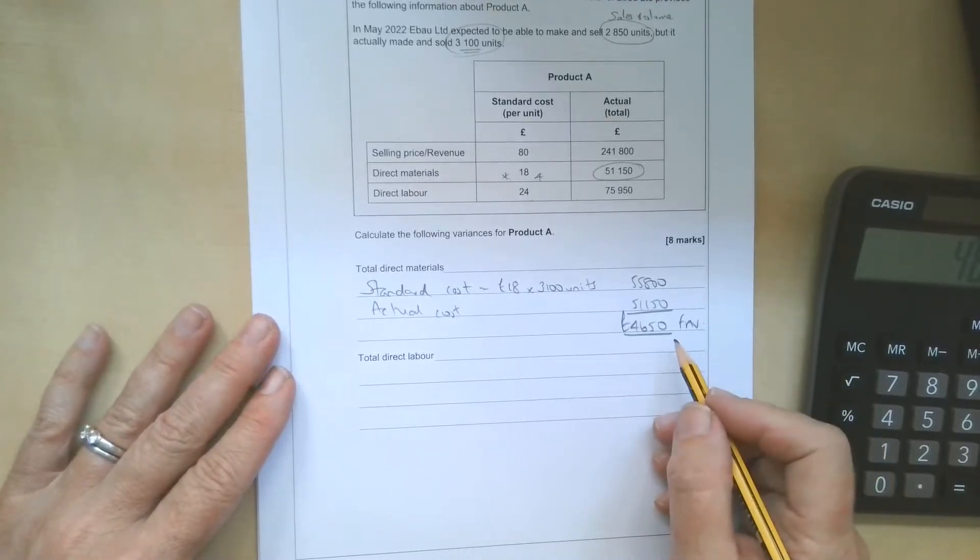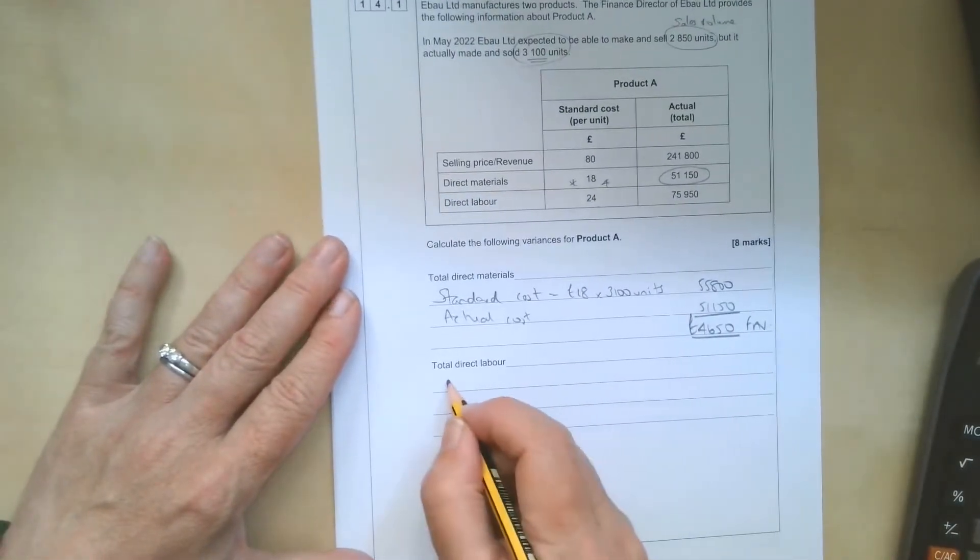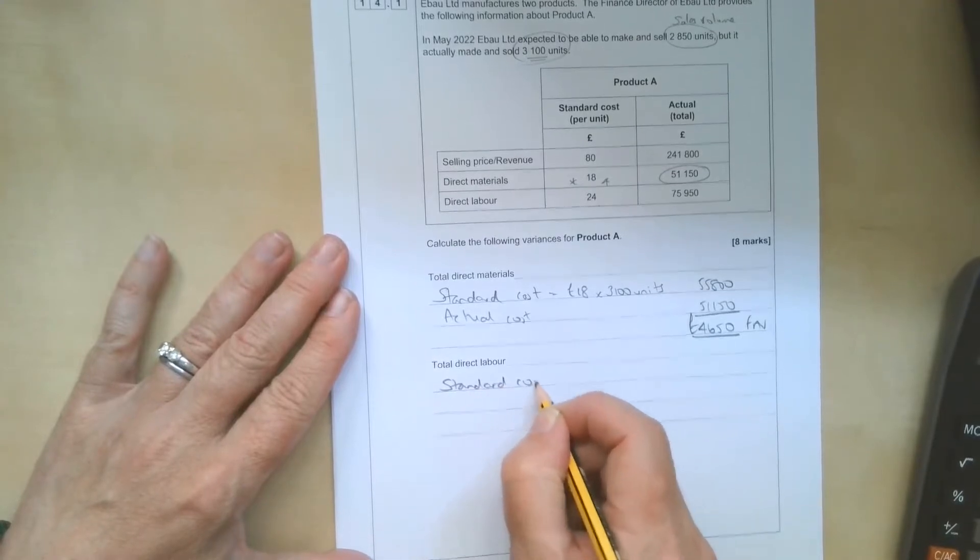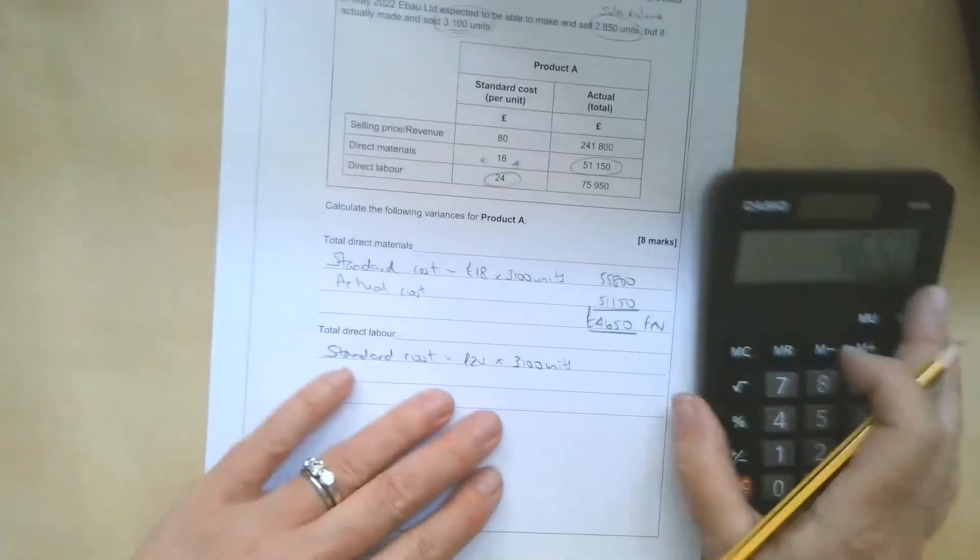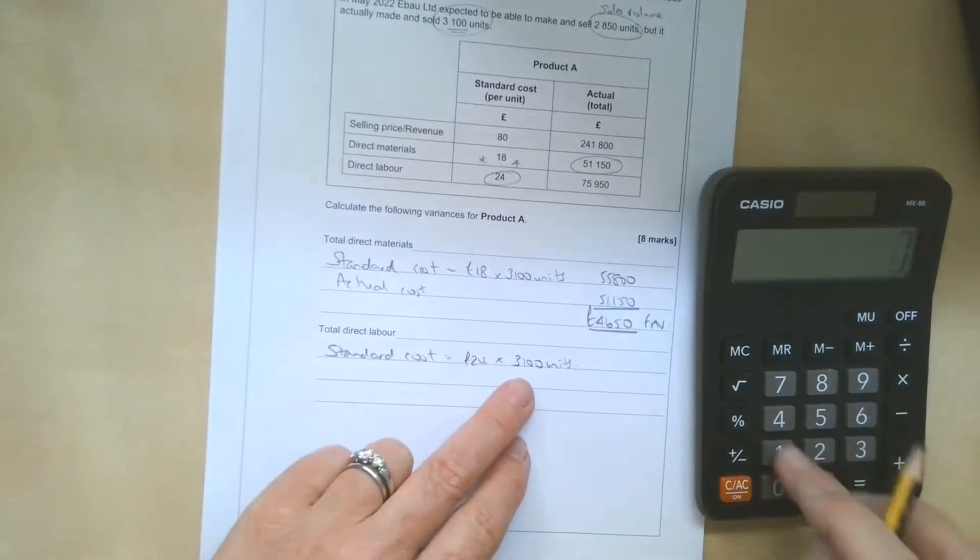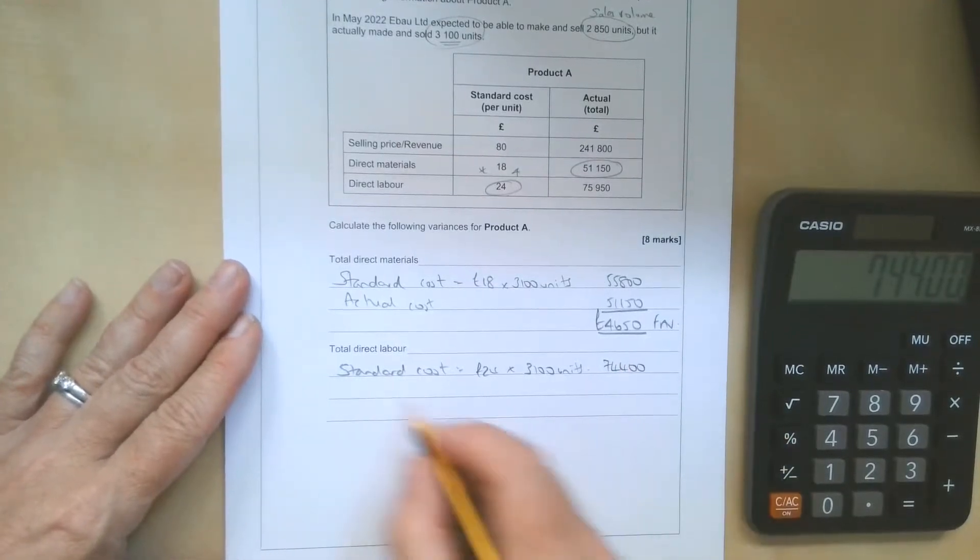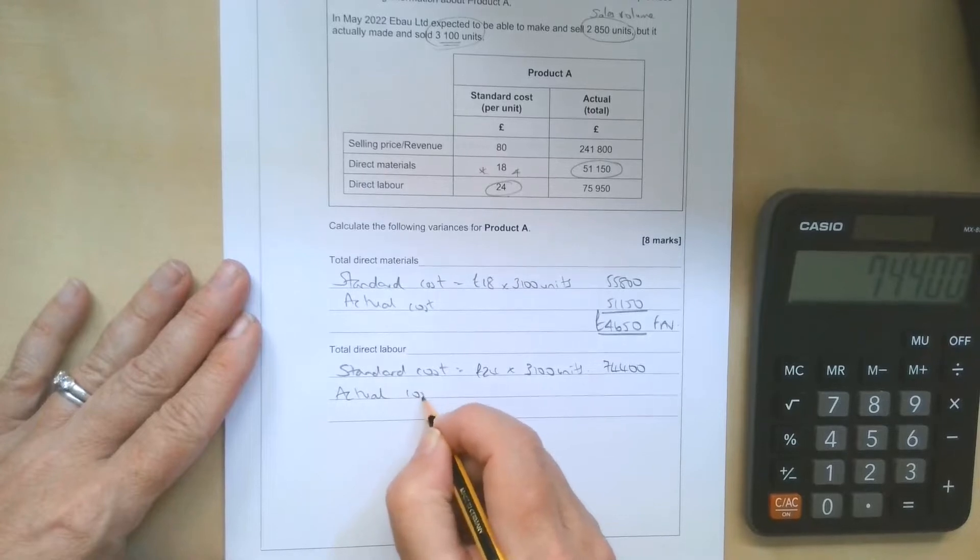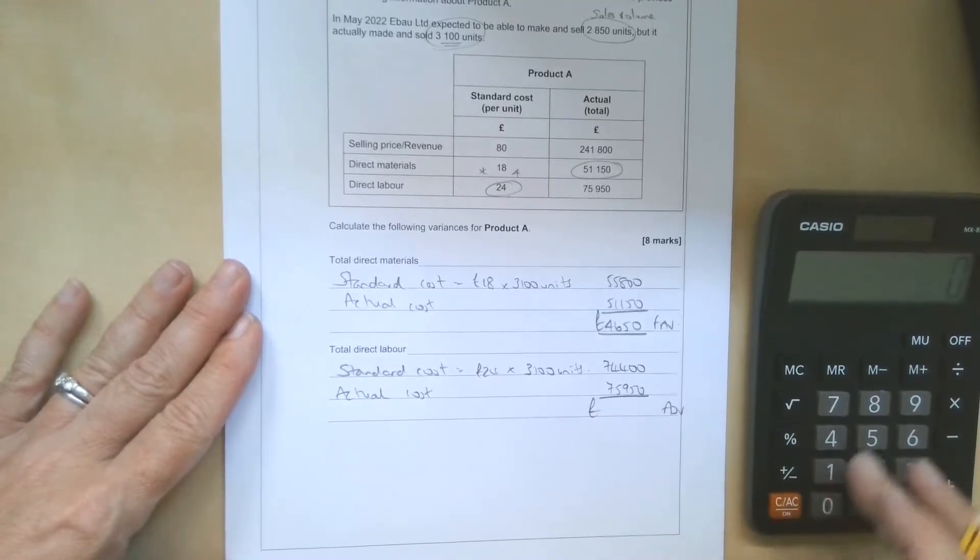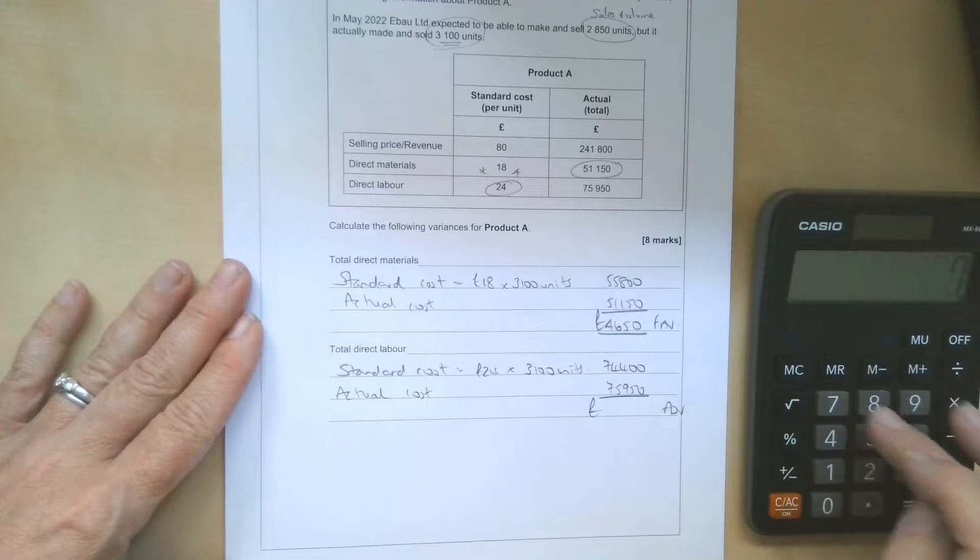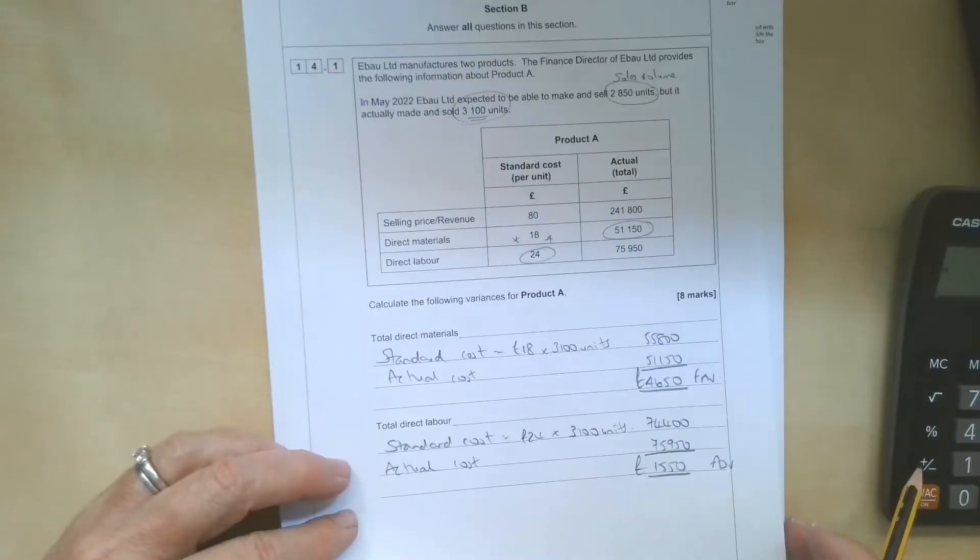We can do the same for labour. So the standard cost for labour, £24 a unit times the 3,100 units we've actually made and produced. So the 2,850 is irrelevant there. So 3,100 times £24. The labour for that quantity of output should have been £74,400. The actual cost for labour was £75,950. So we can see there this is going to be an adverse variance. £74,400 minus the £75,950 is £1,550 adverse.